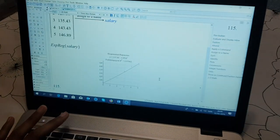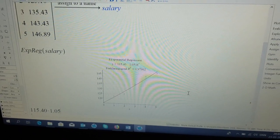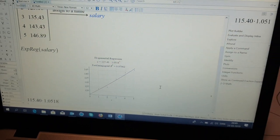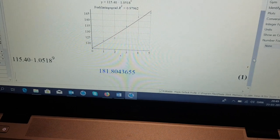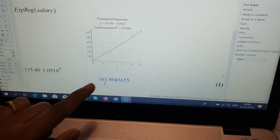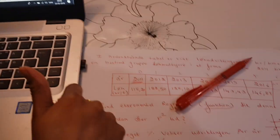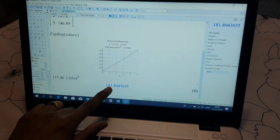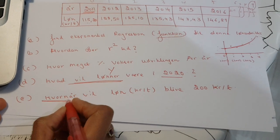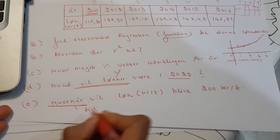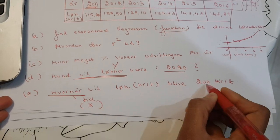So if we want to find when it reaches a certain value, let's say we want to find when it will be 200 kroner per time. In 2011 it was 115, so the first question is when will it be 200 kr?